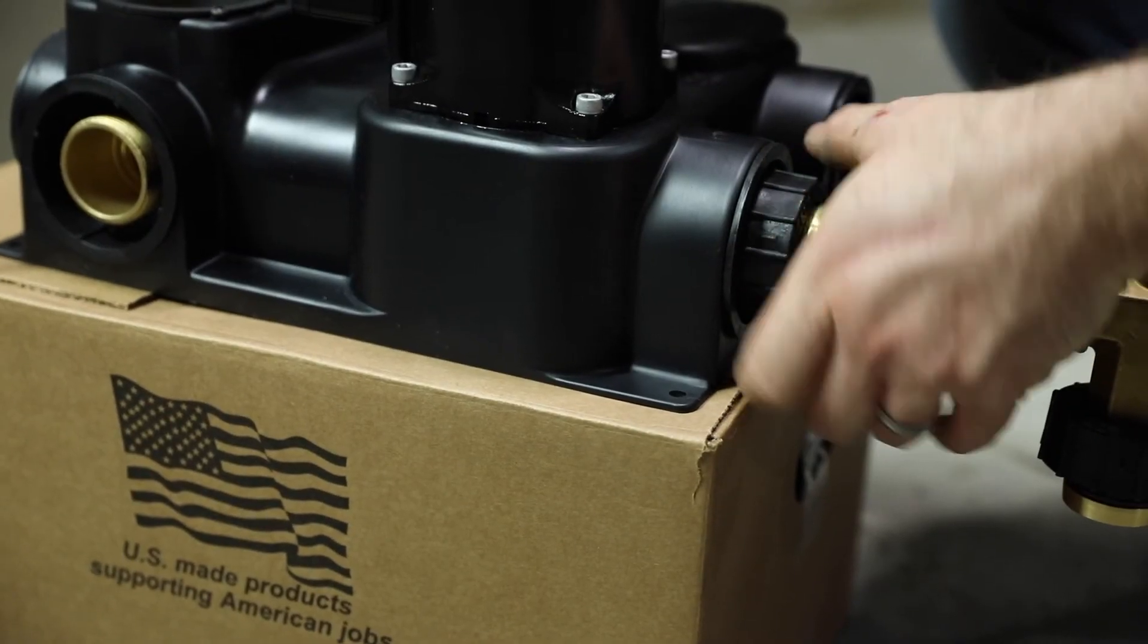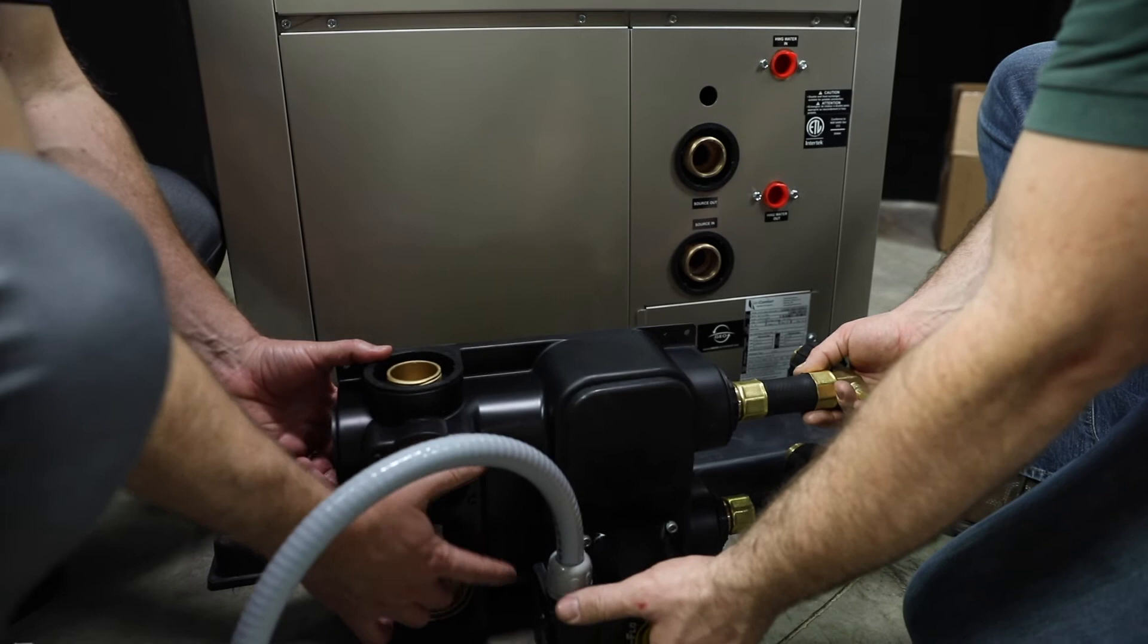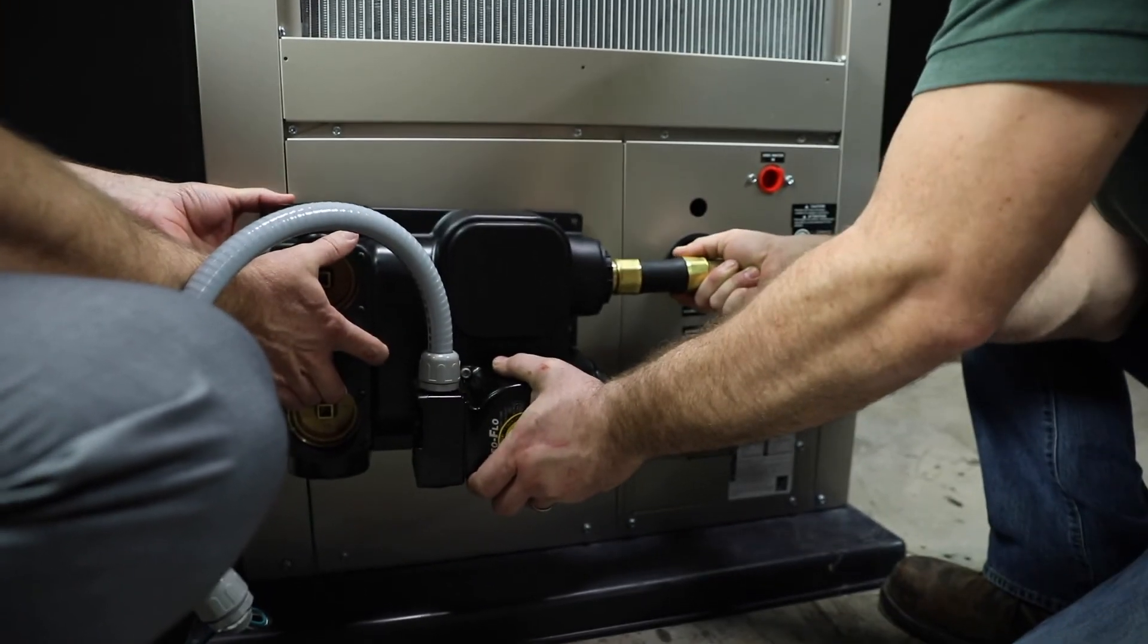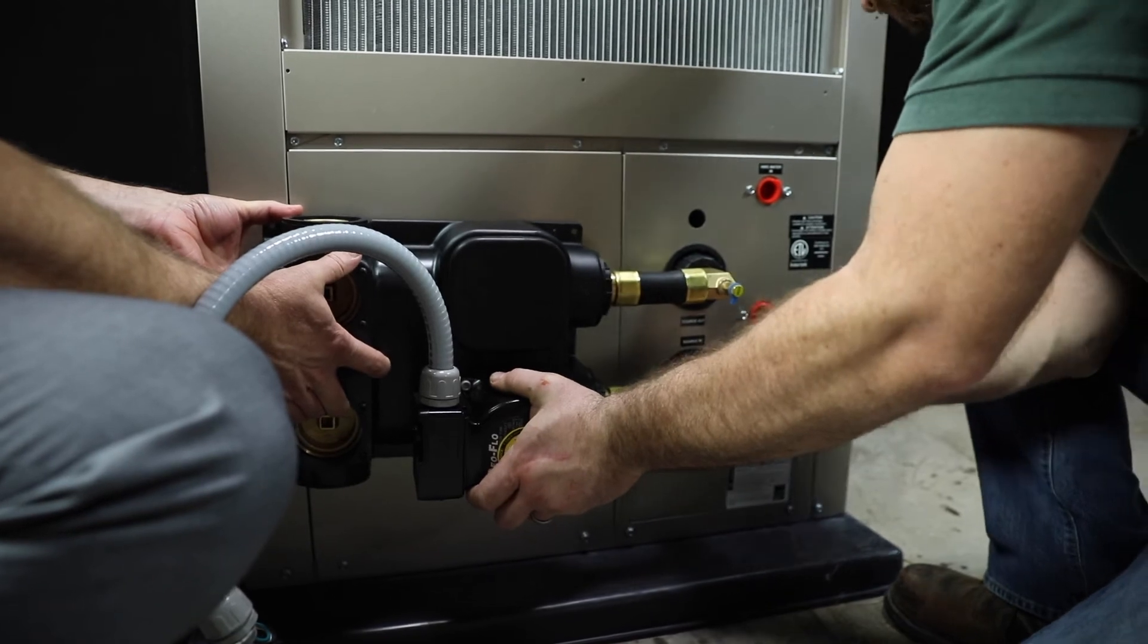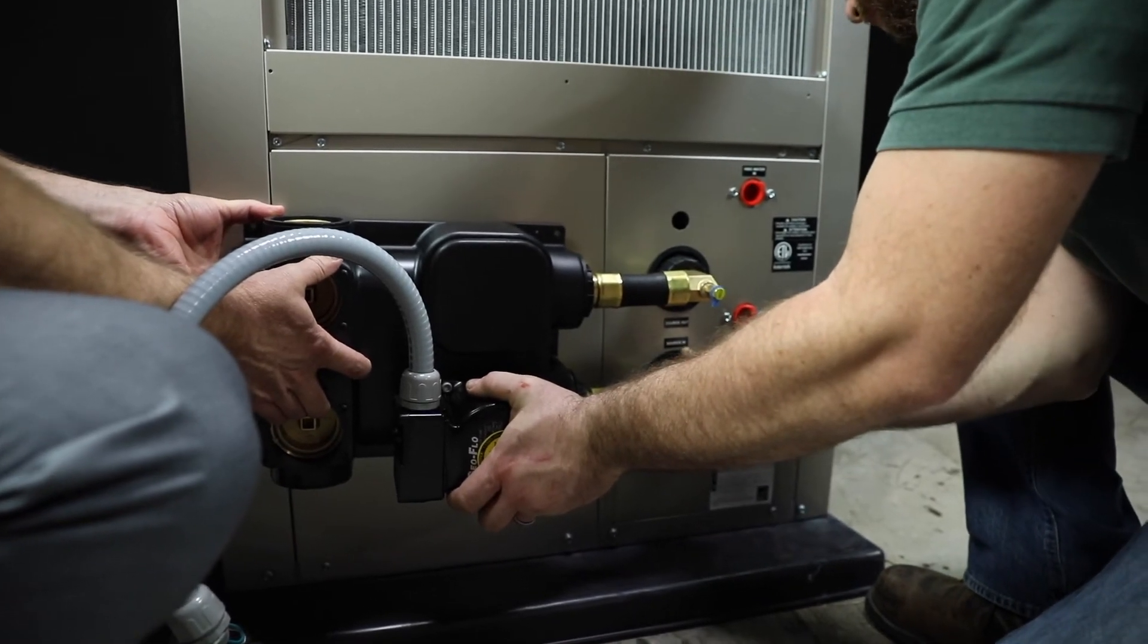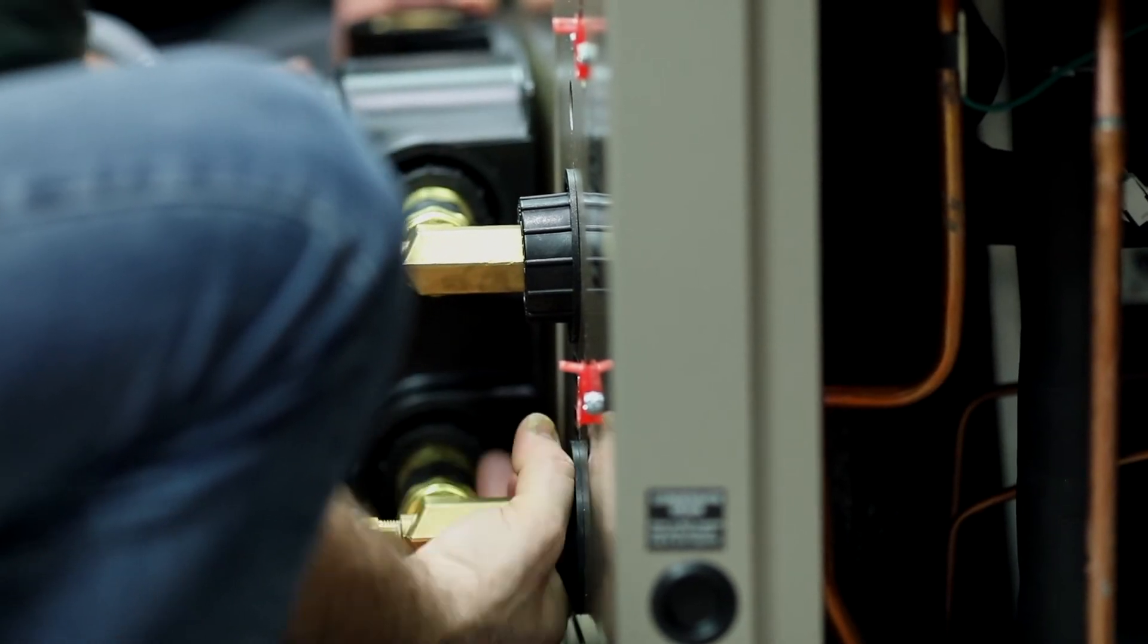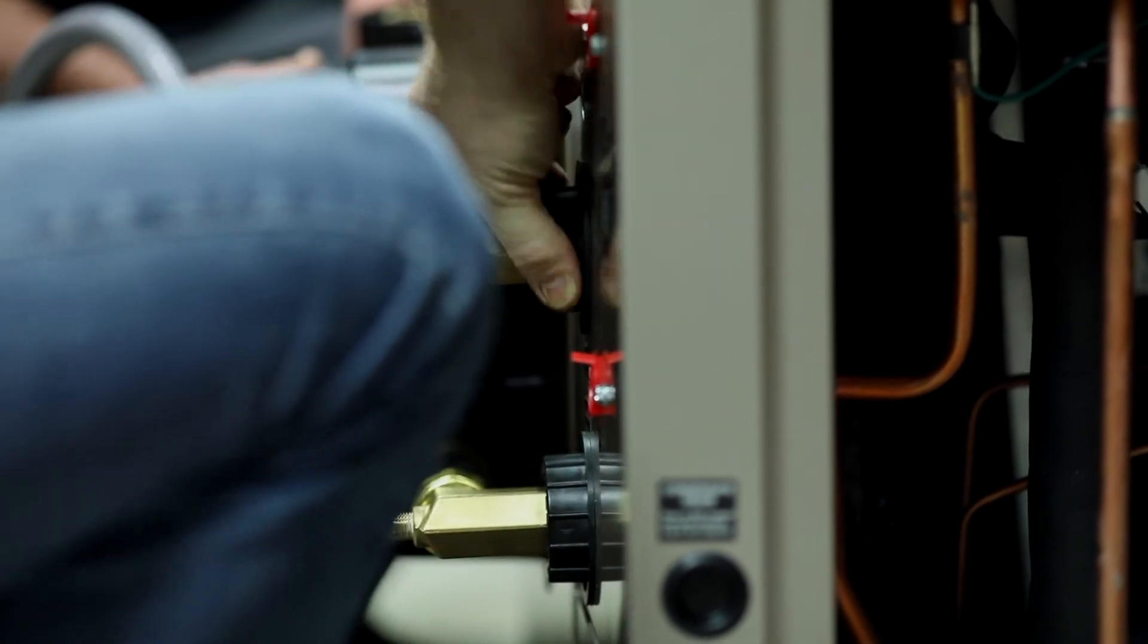Assemble both fittings onto the flow center. For the next step an extra pair of hands is helpful. Another option is to place blocks under the flow center to line up the flow center fittings to unit connections. Lightly hand tighten all double o-ring joints. These will be fully tightened at the end of the installation.